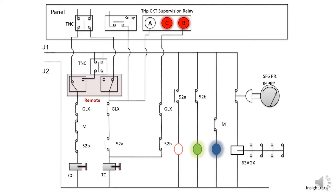Let's see how the breaker works remotely and locally. When the breaker is in remote position, it will operate from the panel — the TNC switch will operate from the panel. In local condition, this switch will convert so the TNC switch will not operate from the panel; instead the local TNC switch will operate. If the breaker is in local condition, it will operate from the local panel, and protection trip will also be active.